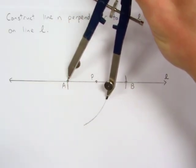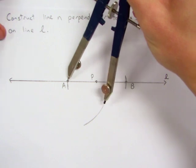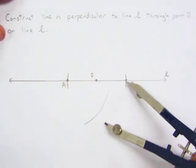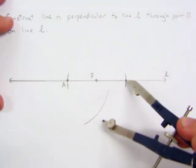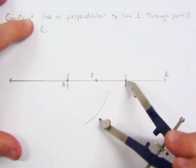Now using the same compass measure we are going to move the point over to point B. And then we are going to draw an arc that intersects our first arc.